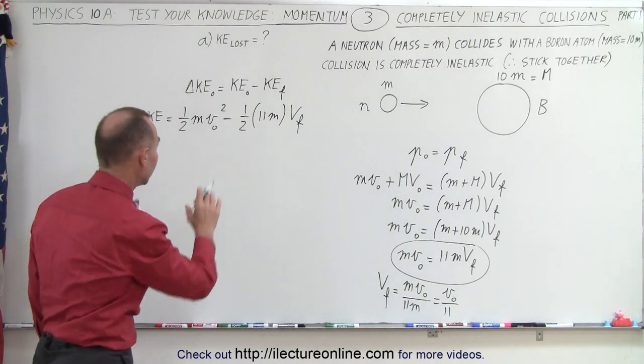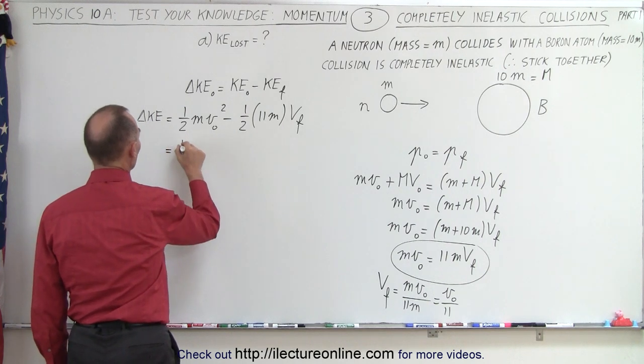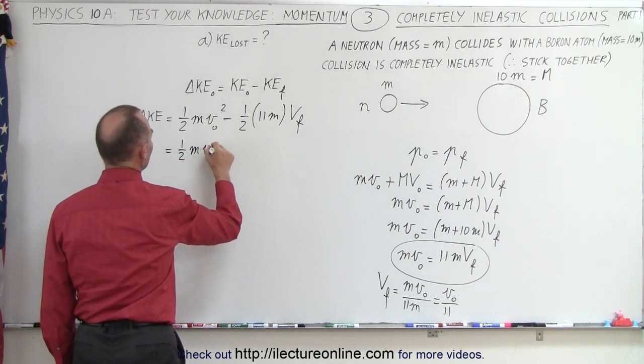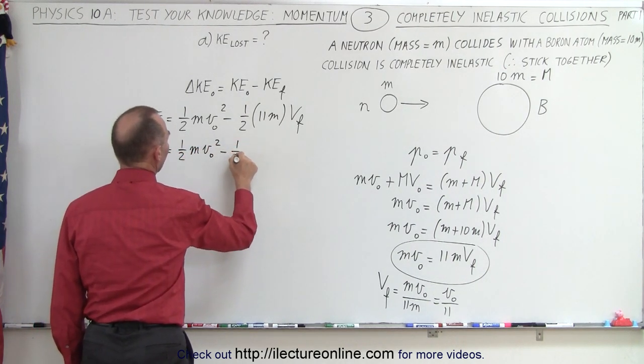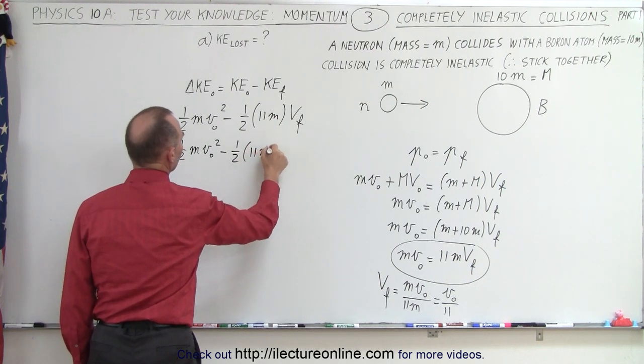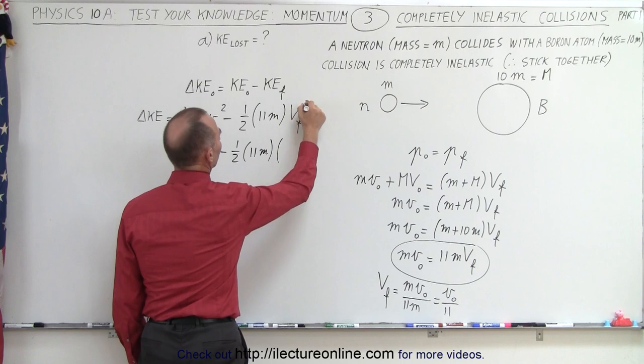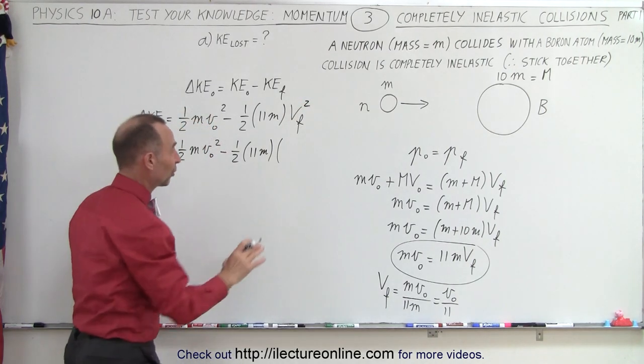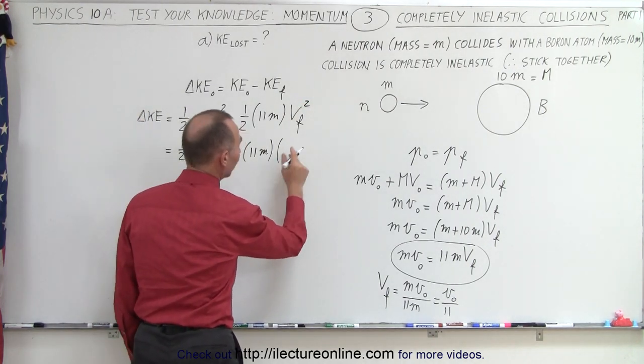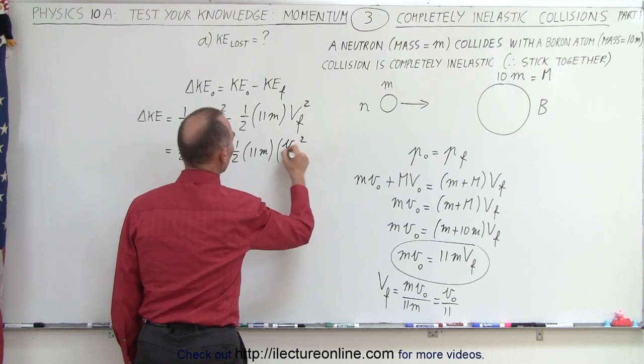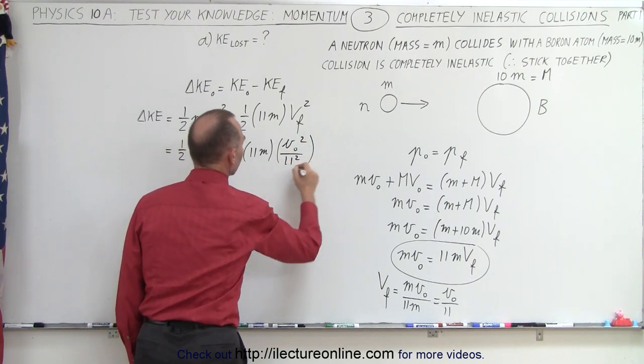Now let's go ahead and plug that in there. So we can say that this is equal to 1 half mv initial squared, minus 1 half times 11m, times v final, which is - oh, I need to square it, make sure it's squared, of course. And so this becomes v initial squared over 11 squared, like this.